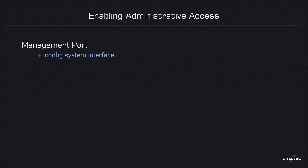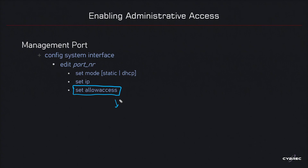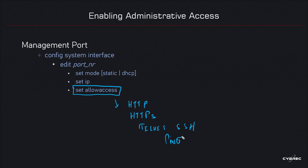To connect to the firewall for management, first designate a management interface, configure it with an IP address, and use the `set allowaccess` command. This command makes an interface a management port by specifying what protocols the interface will accept for administration — things like Telnet, SSH, HTTPS, and ping. Essentially, it controls what management traffic the interface is going to accept and process.